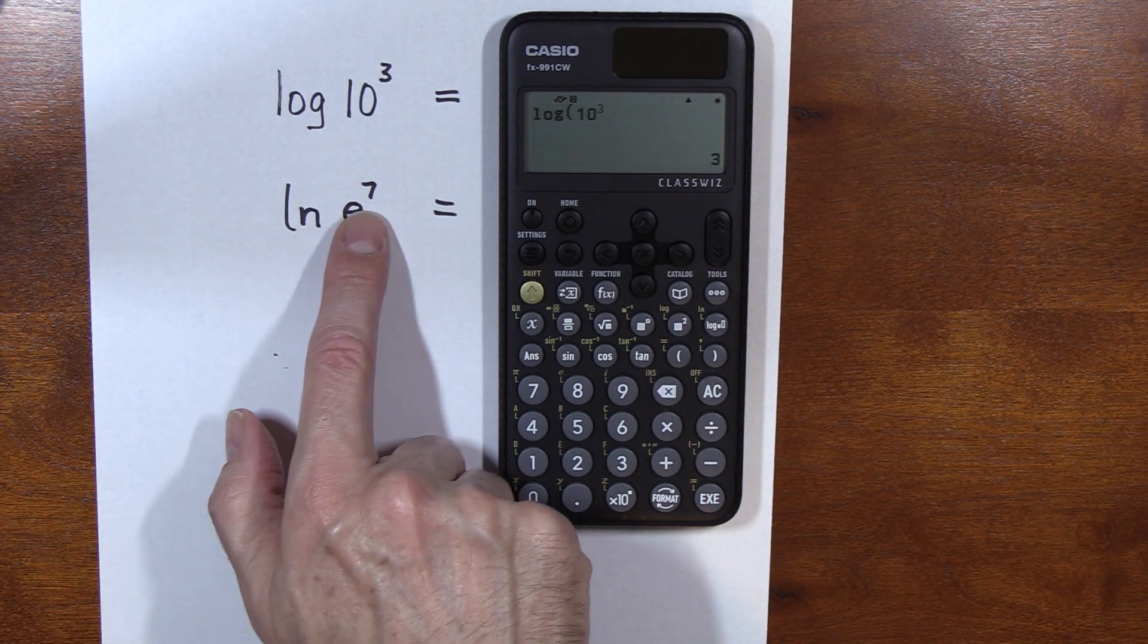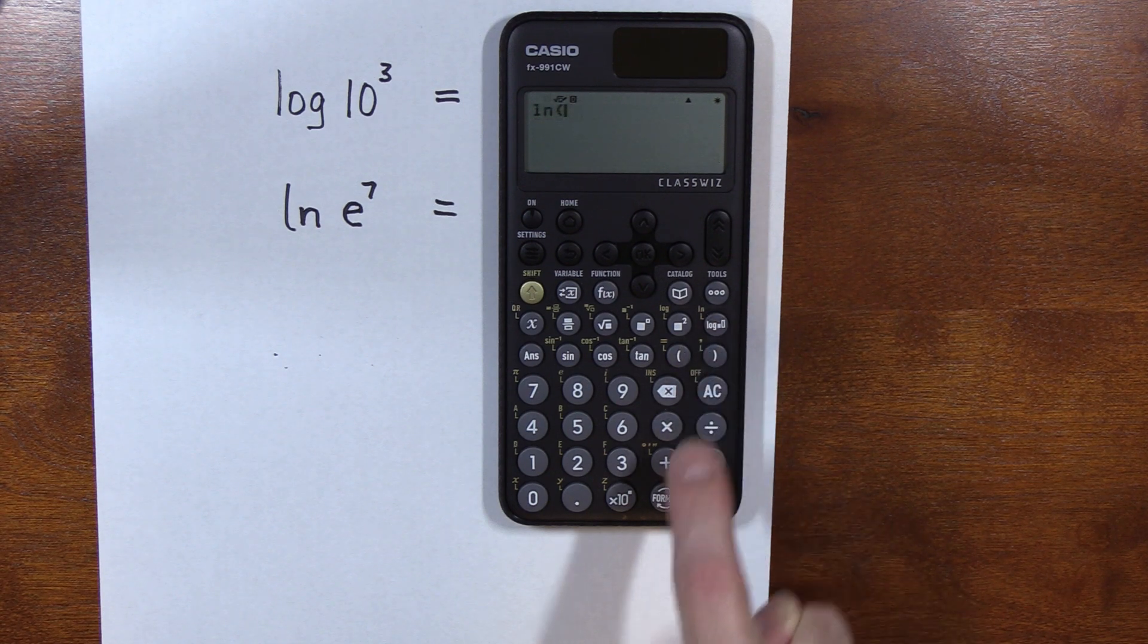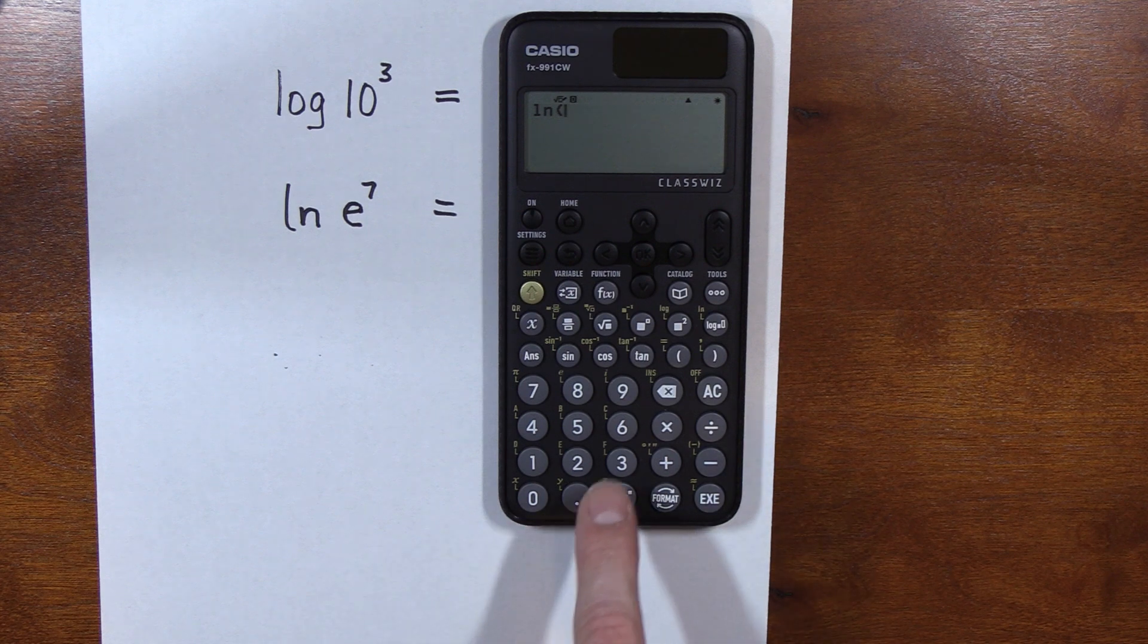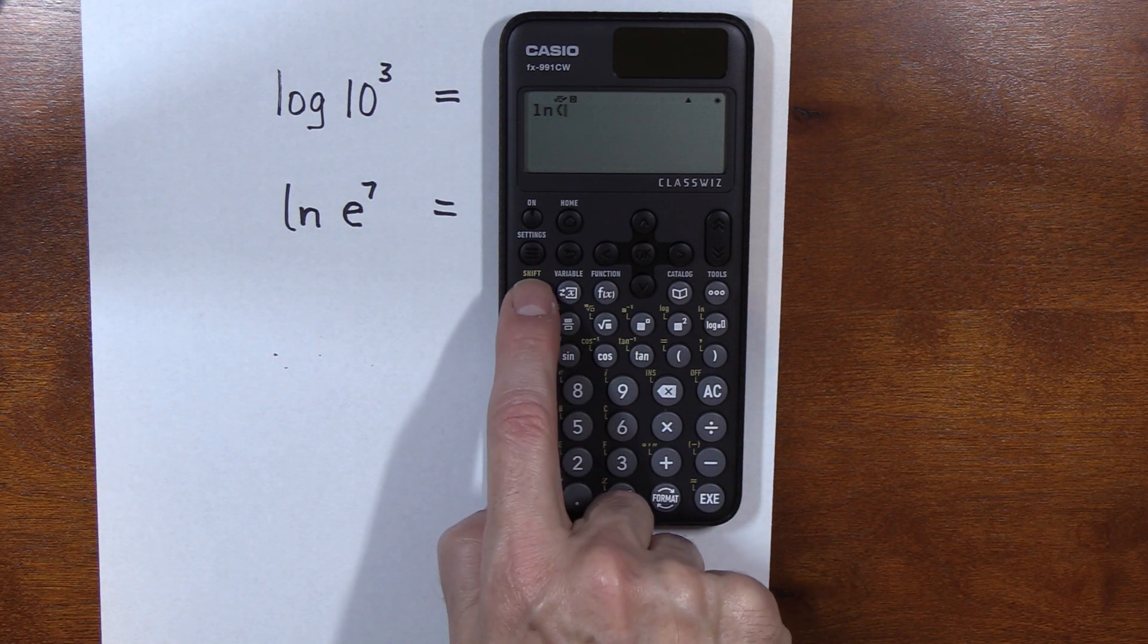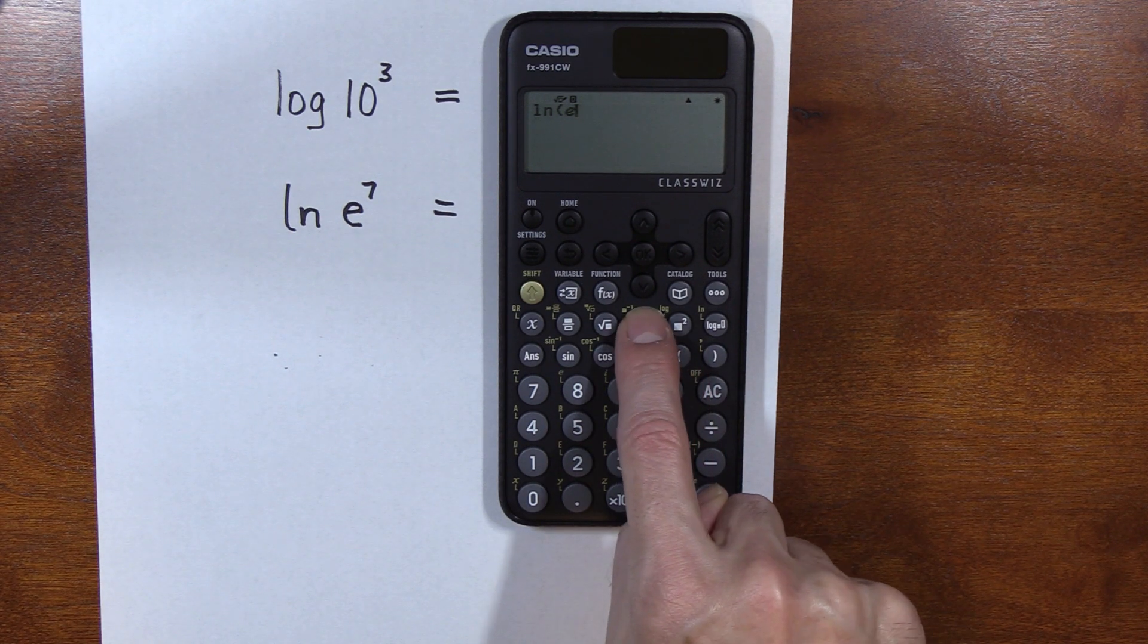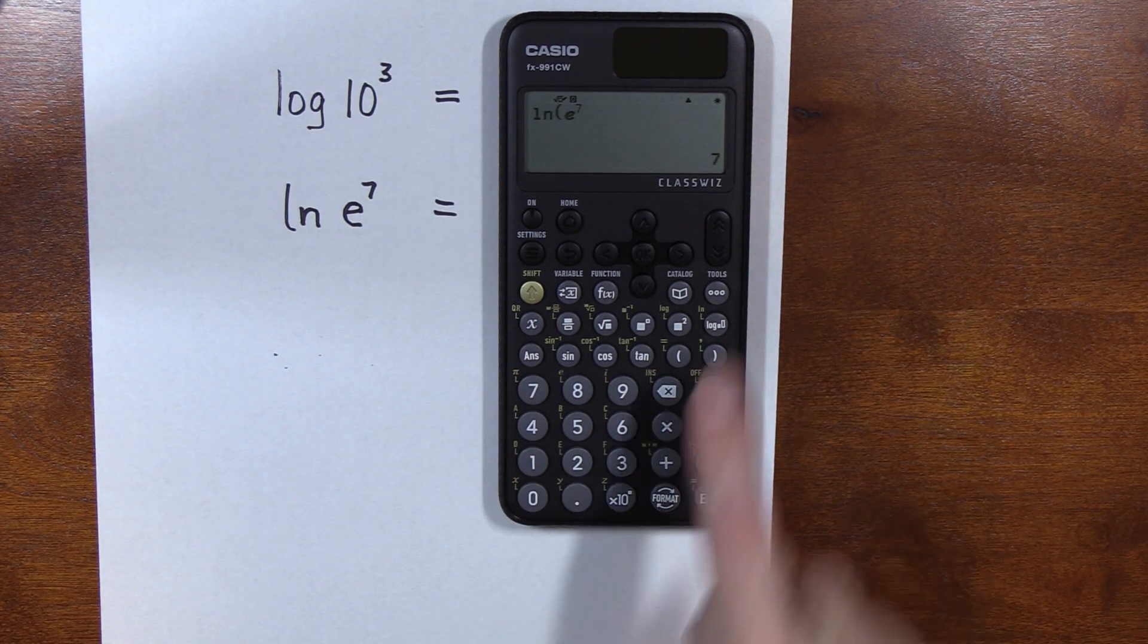Let's do the same thing here. So we're going to do natural log, which is under this key here, the log key. So I did shift and hit that log key and get the natural log of E to the seventh. E is shift 8. That gives me an E. E to the 7. And then I can hit execute, 7.